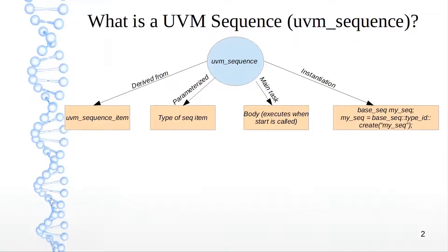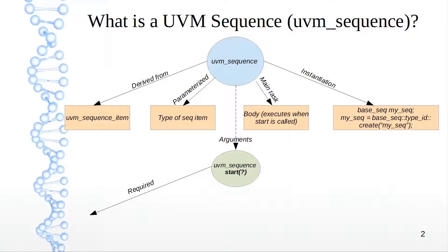Another question that gets asked is: how is a UVM sequence called? We use the start task. What are the arguments for the start task? There are four arguments — one required and three optional. The first required argument is of course the sequencer, which extends from the UVM sequencer base. A particular sequence is tied to a particular kind of sequencer, so you want to provide that information.